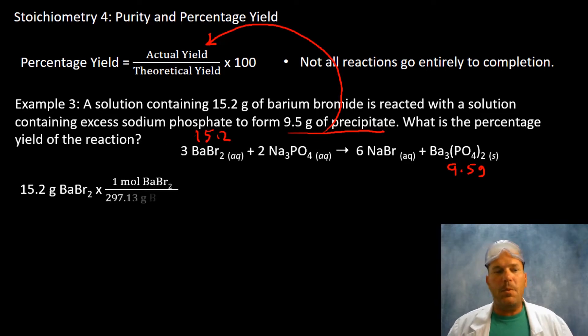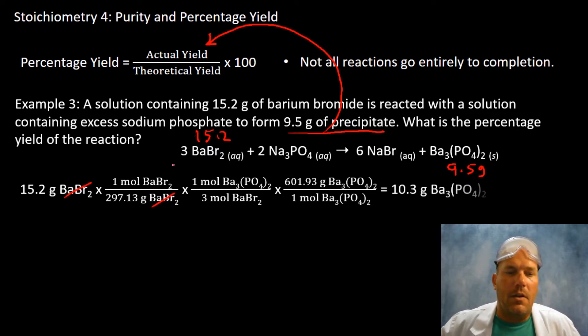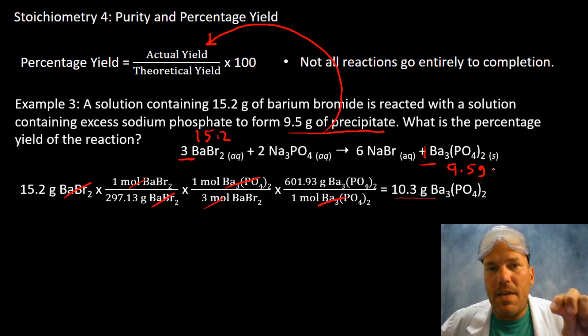Calculating molar masses, using that three to one mole ratio here, converts us from the barium bromide into the barium phosphate. And in one mole of barium phosphate there are 601.93 grams of barium phosphate. And that's where we're ending. We're trying to find out how many grams of barium phosphate are theoretical. 9.5 is the actual.